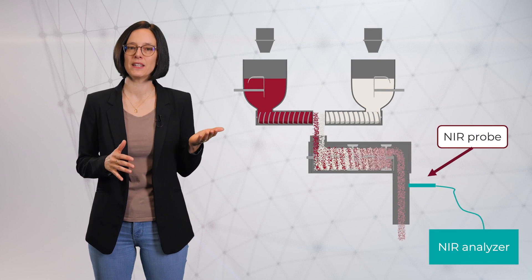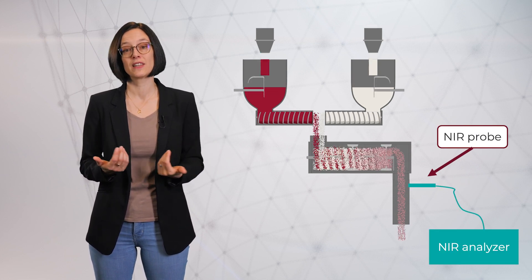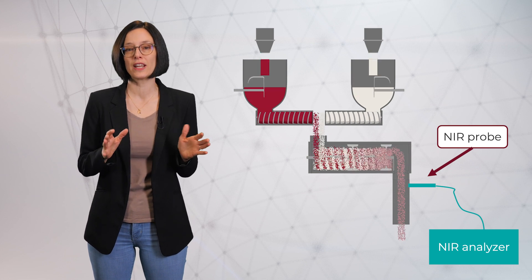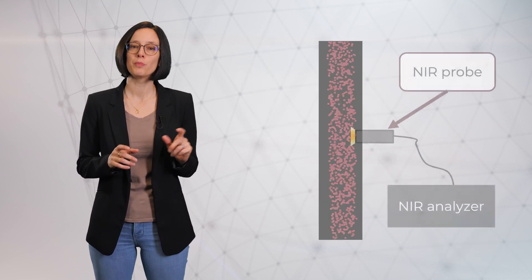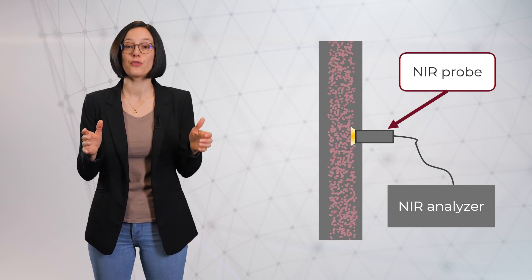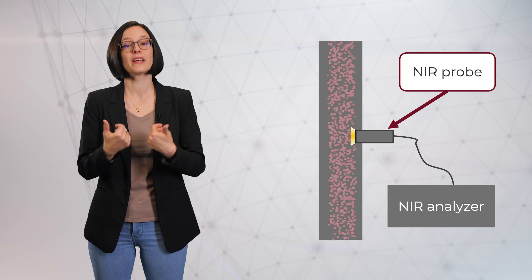Here you see a schematic of an NIR probe installation. An average NIR probe has a diameter in the range of 5 to 10 mm. The probe emits light, which gets scattered on the particles. The reflection is captured by the probe and analyzed.